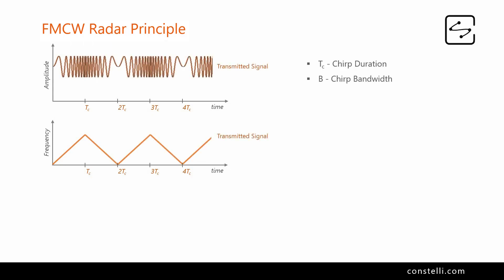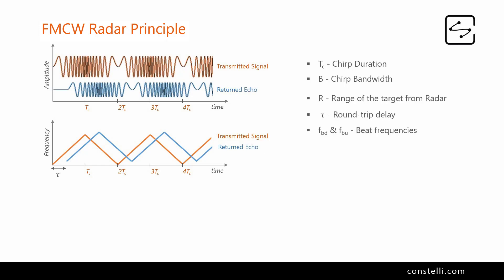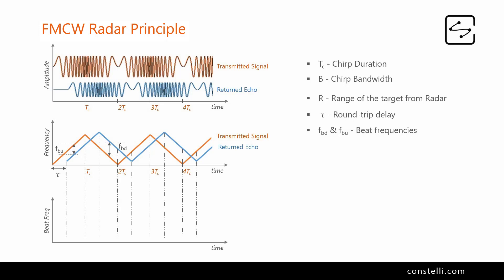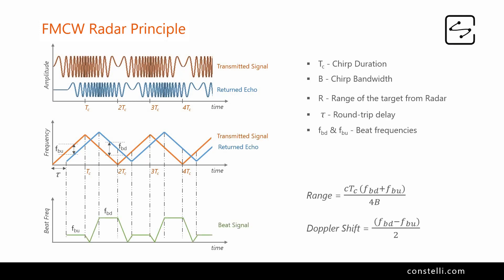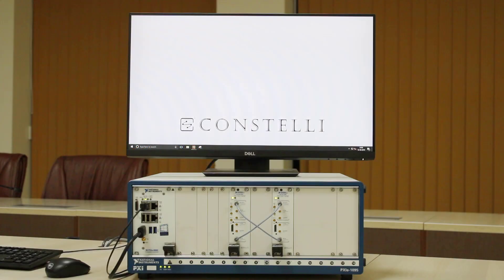Let's quickly check how FMCW radar works. A linearly modulated FM chirp signal with either a triangular or sawtooth pattern is transmitted by the radar. The echo signal bounced off a target is delayed, Doppler shifted, and attenuated with respect to the transmitted signal. The reflected signal is mixed with the transmitted signal to produce beat frequencies. The delay and Doppler of the target are estimated from beat frequencies FBU and FBT.